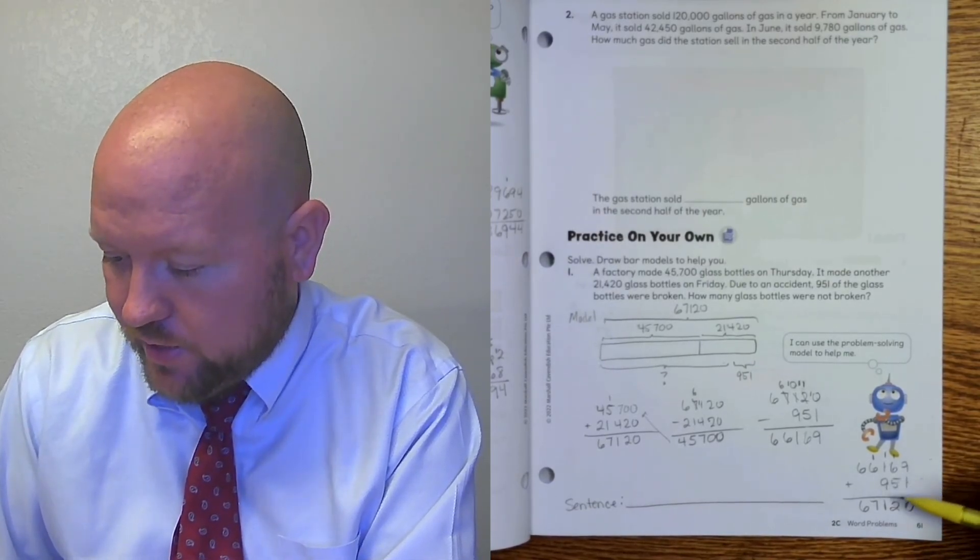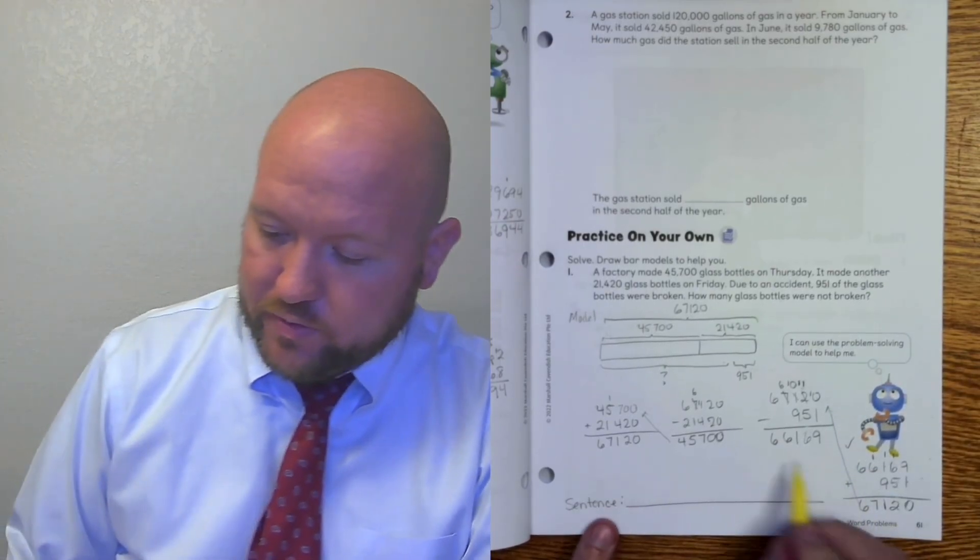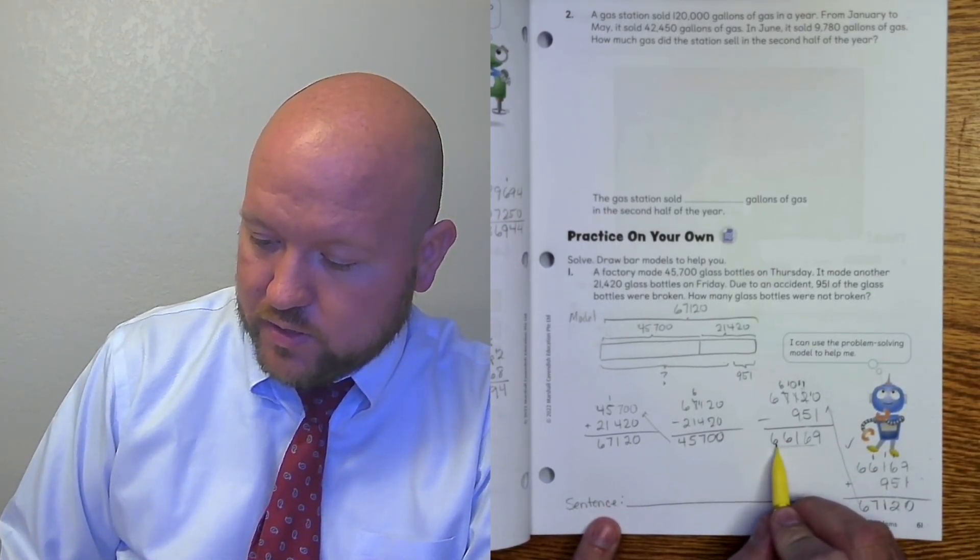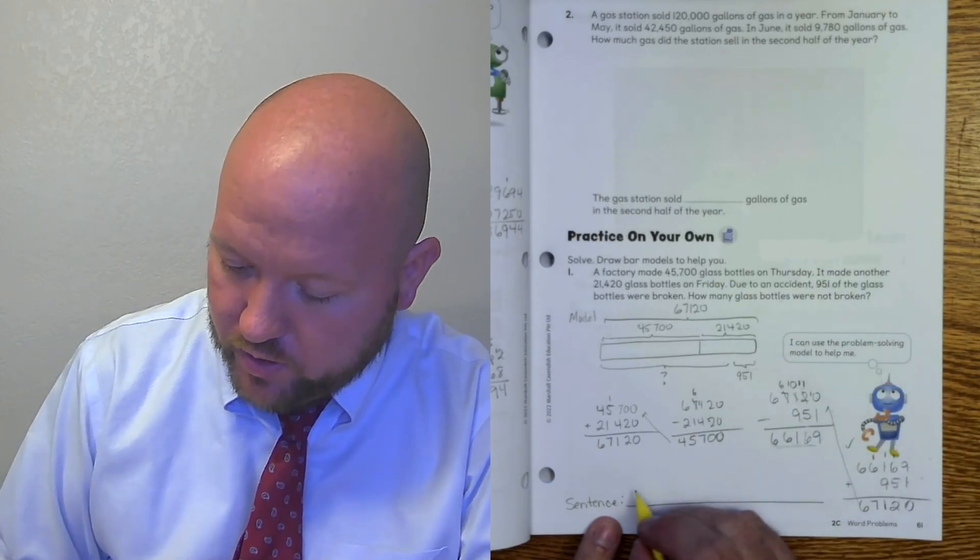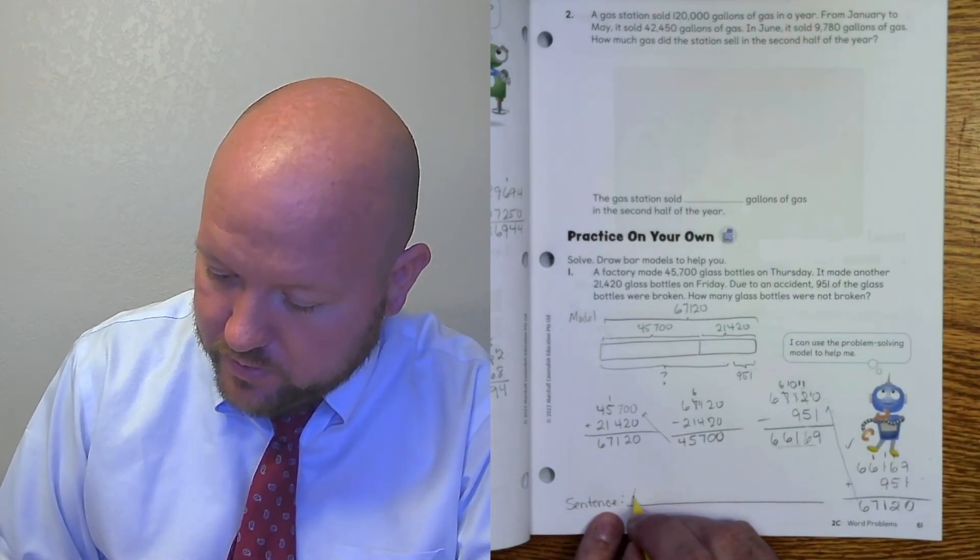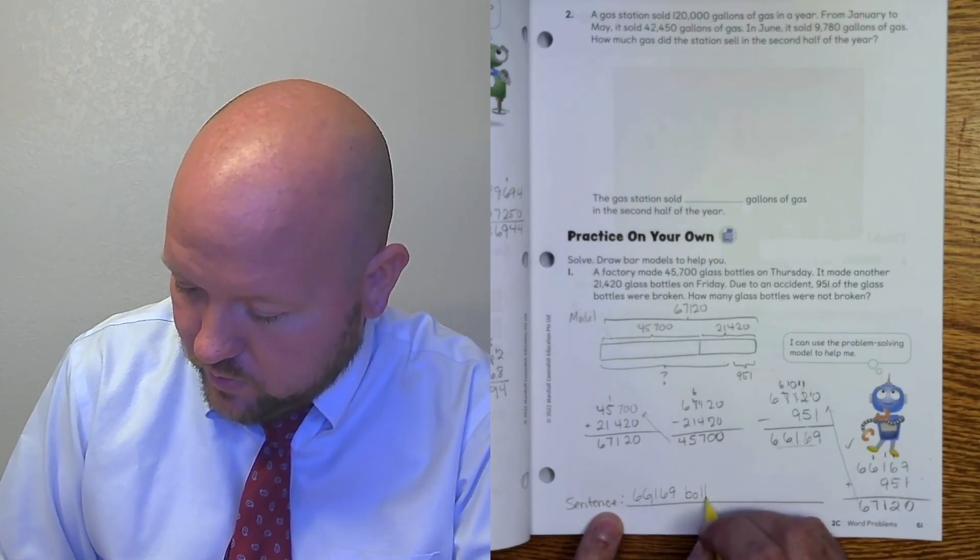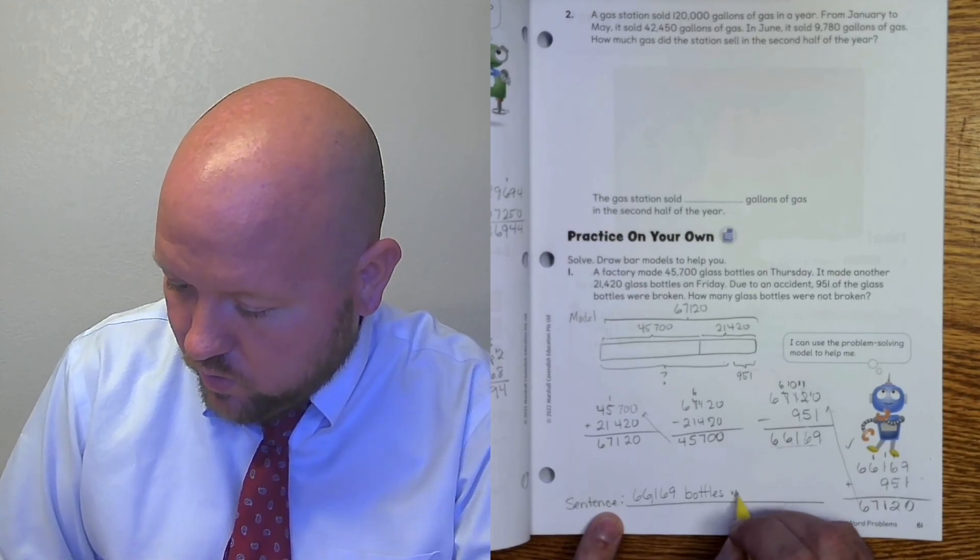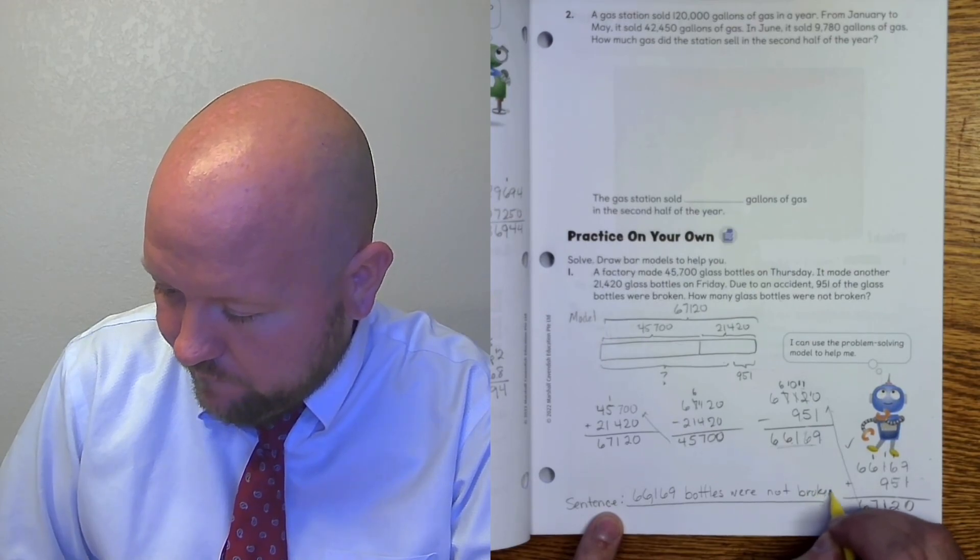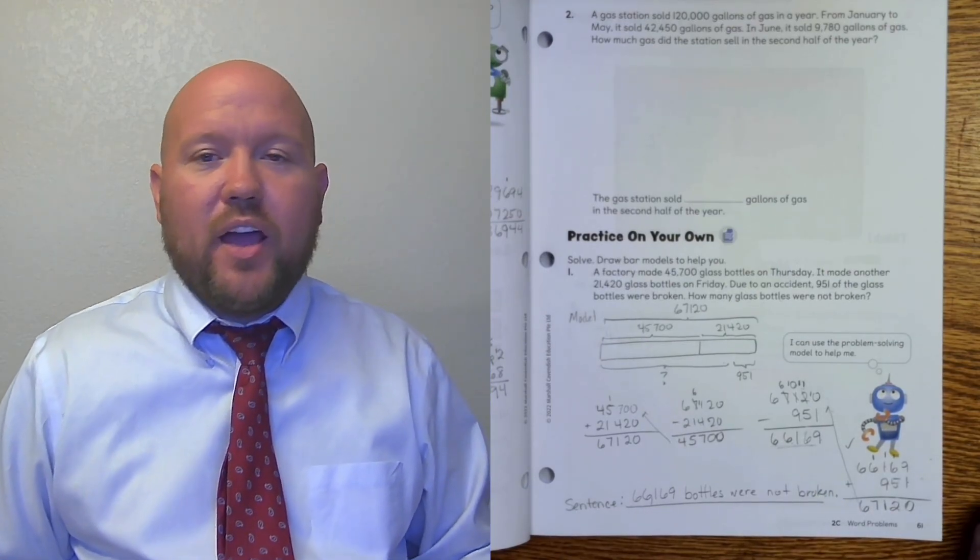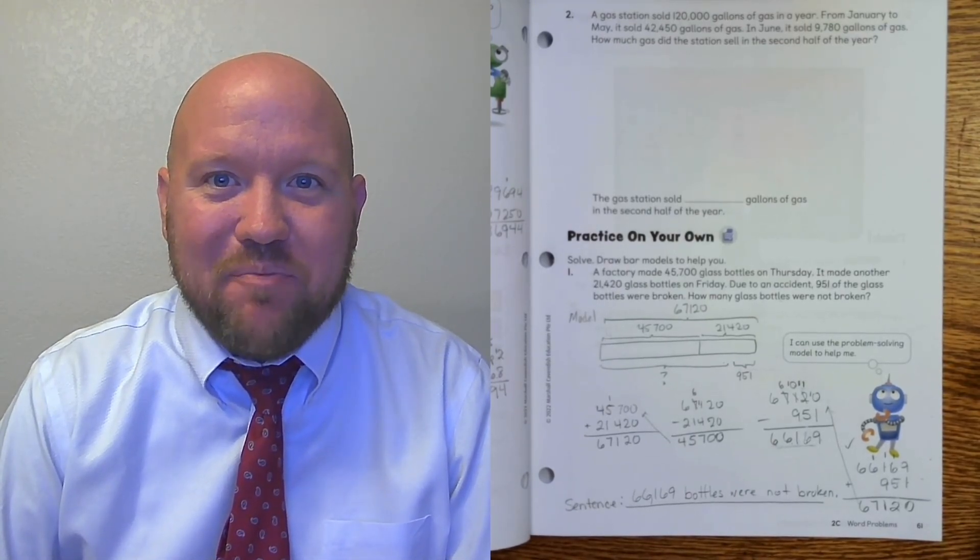But now, this number right here matches that number up there. And so I can have some confidence that this is the right answer. 66,169. So how many bottles were not broken? 66,169 bottles were not broken. And there we go. All right, that is the end for today's lesson. Good luck on your independent work. And I look forward to seeing you next time. Bye.